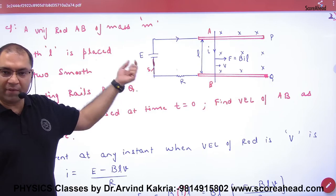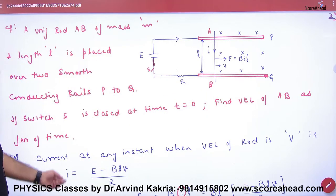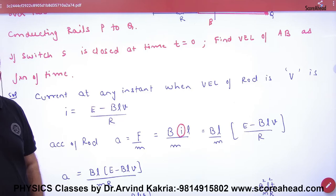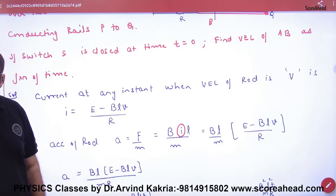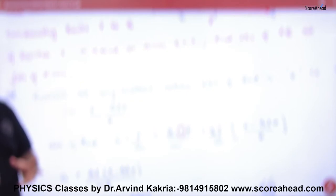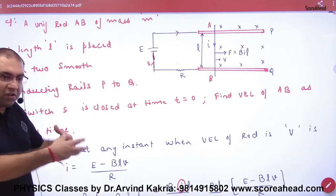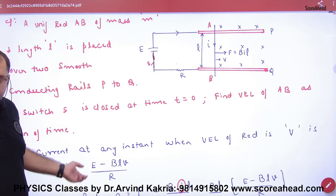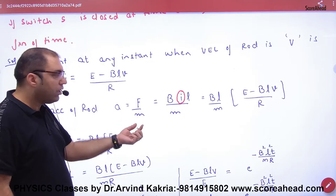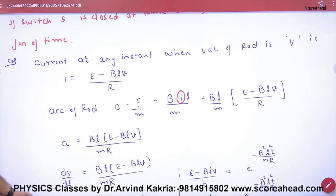So EMF E, the battery EMF E, current passes, rod moves and motional EMF which will oppose. So current, what will happen? Overall your EMF minus BLV divided by resistance R. What point is clear here? Net EMF, applied EMF, what will happen? Current. Now what will happen in any instant? Because the rod will accelerate, so what will happen in terms of time? Acceleration, force upon mass, force BIL upon mass. i we will put here. Acceleration, solve acceleration.